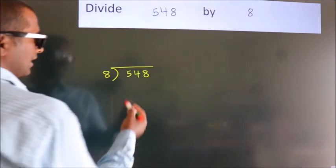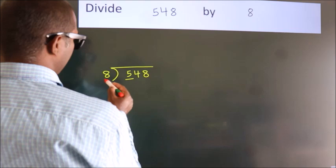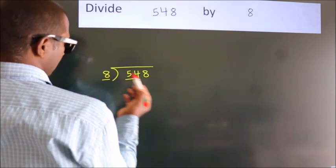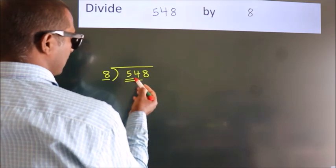Next, here we have 5, here 8. 5 smaller than 8. So we should take two numbers, 54.